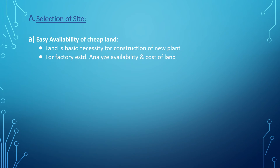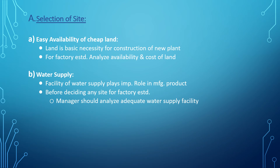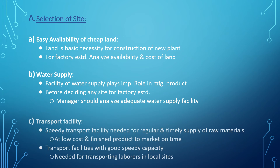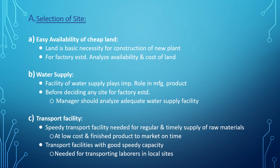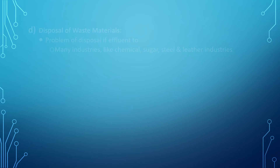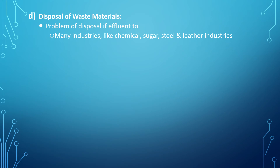For selection of site, easy availability of cheap land is essential as land is the basic necessity for constructing a new plant. Managers should analyze availability and cost of land. Water supply plays a vital role in manufacturing production, so adequate water supply must be analyzed before deciding on a site. Transportation facilities for regular and timely supply of raw materials at low cost and delivery of finished products to market are needed, including transportation for laborers at local sites.